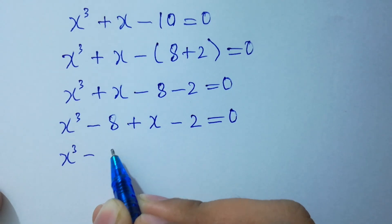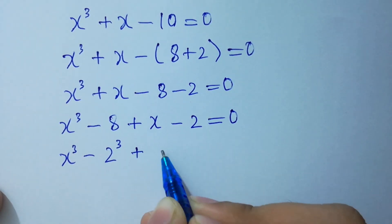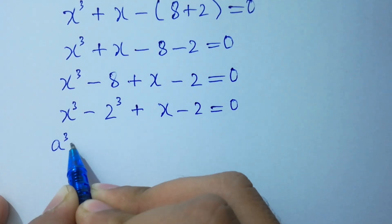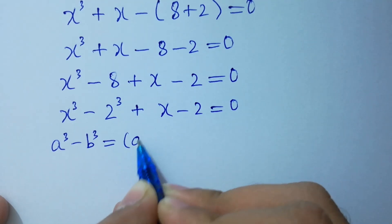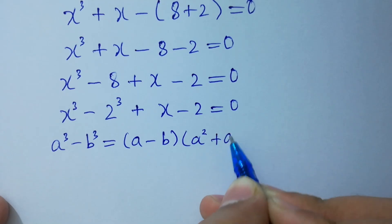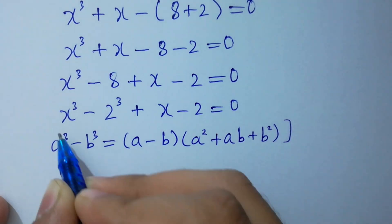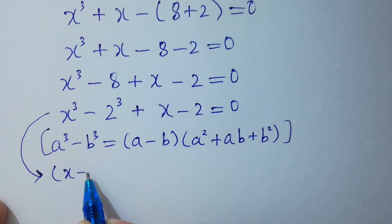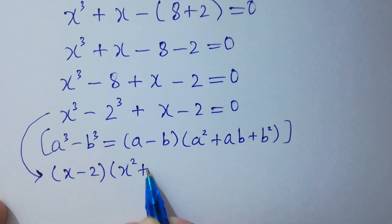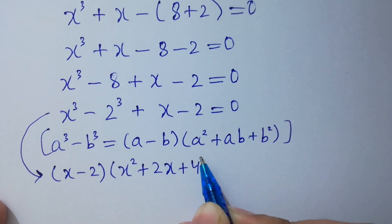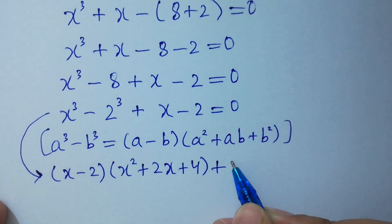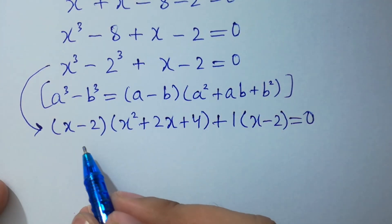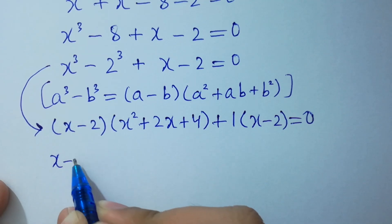We rearrange to get x cubed minus 2 cubed plus x minus 2 equals 0. As we know, a cubed minus b cubed equals (a minus b)(a squared plus ab plus b squared). So this equation becomes (x minus 2)(x squared plus 2x plus 4) plus 1 times (x minus 2) equals 0. We can factor out (x minus 2) since it is common.